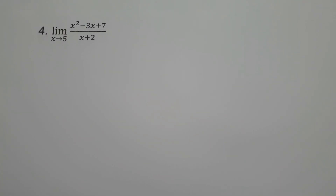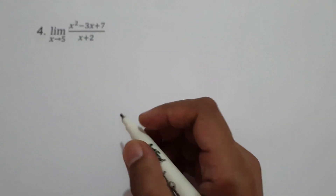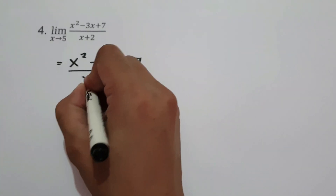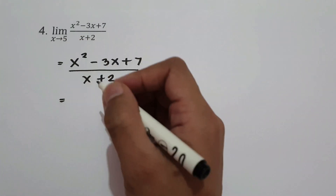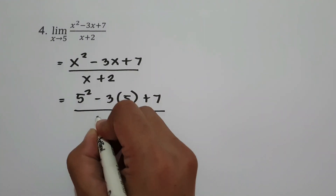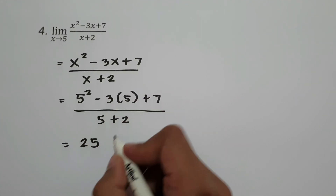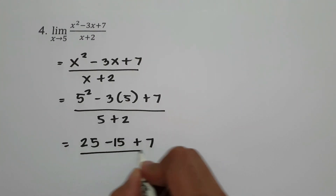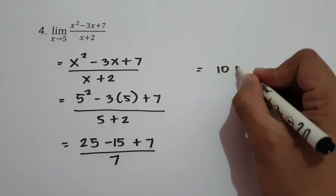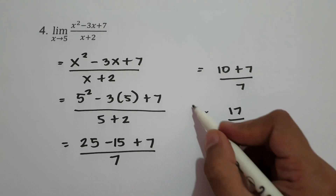On example number 4, we have the limit of x squared minus 3x plus 7 all over x plus 2 as x approaches 5. Substituting x = 5: 5 squared minus 3 times 5 plus 7 all over 5 plus 2 — that is 25 minus 15 plus 7 over 7. So 10 plus 7 is 17, giving us 17 over 7 as our answer.